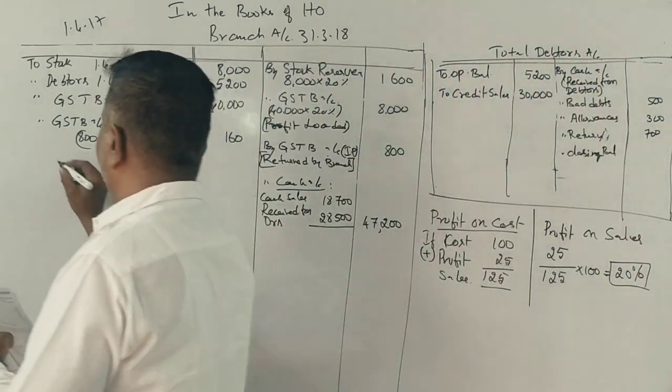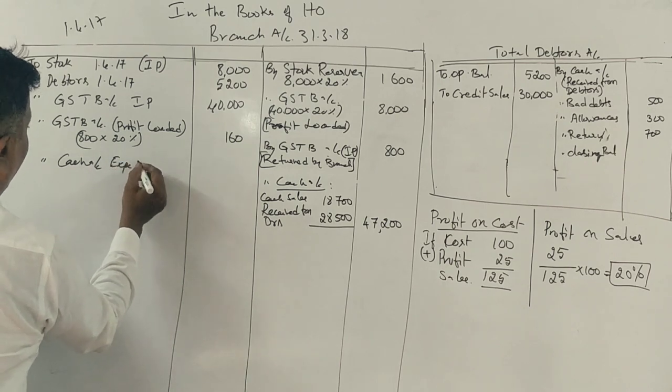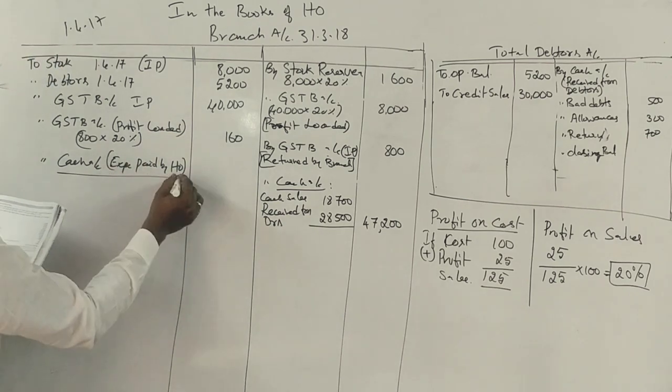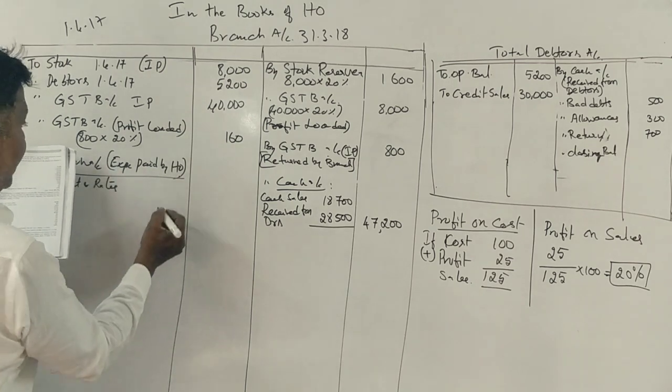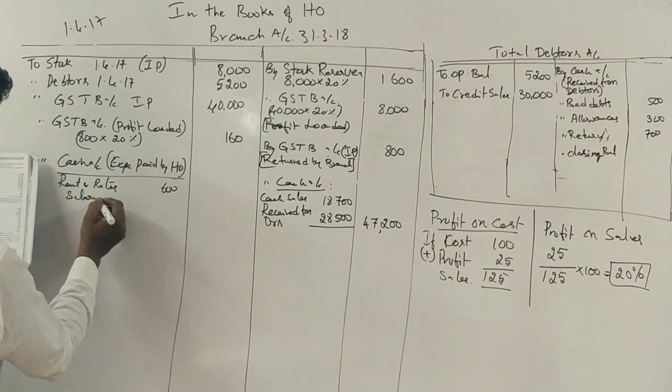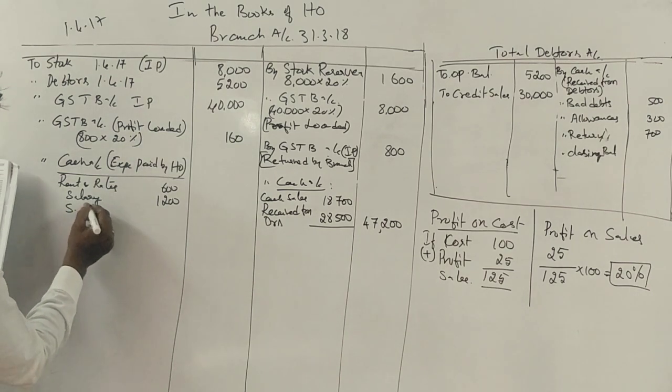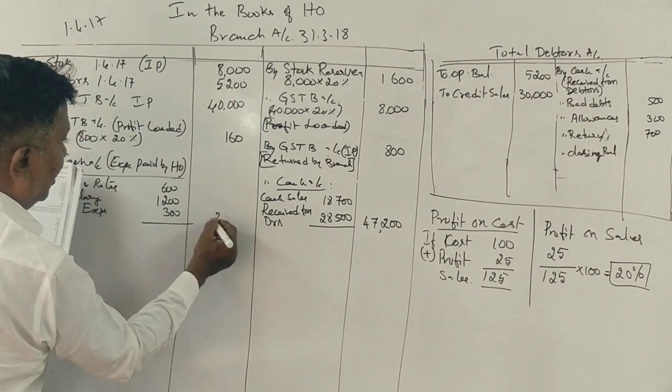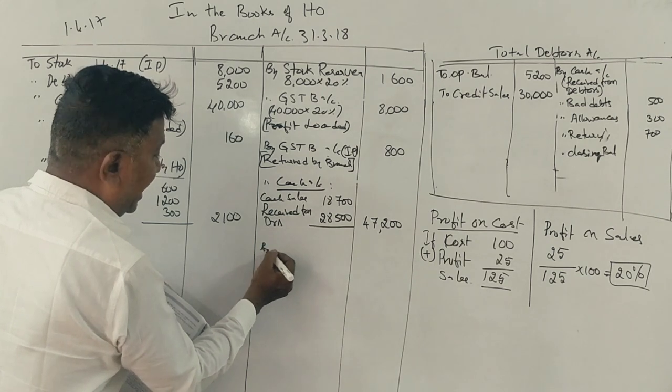Expenses paid by head office: rent and rates are 600, salary and wages are 1,200, and sundry expenses are 300, totaling 2,100.